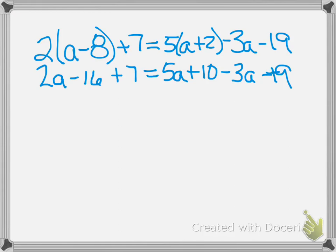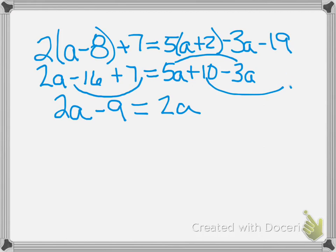We've got like terms all over the place, so we're supposed to combine like terms on the left first. I have 2A. If I have negative 16 and I add 7, what is that? Negative 9, so minus 9 equals. On the right I have 5A minus 3A, 2A, and I also have 10 minus 19. If I have 10 and I have to take away 19, where does that leave me? Negative 9.